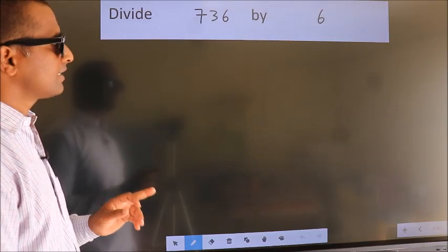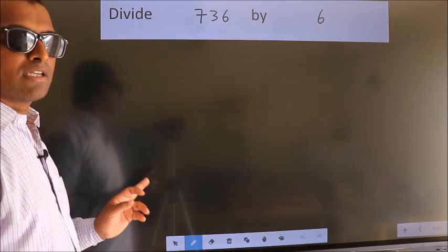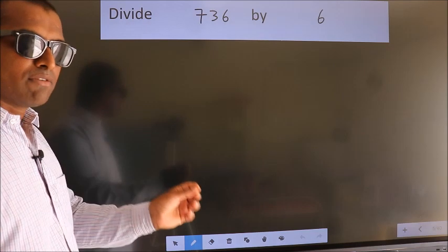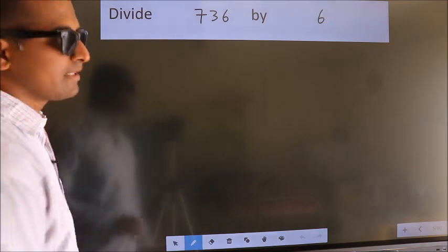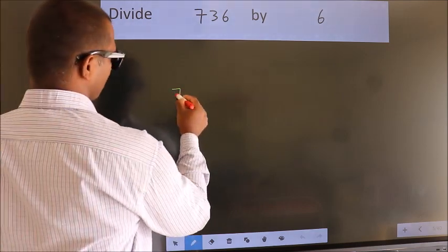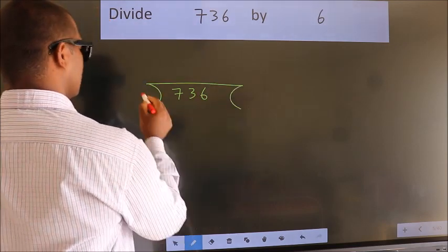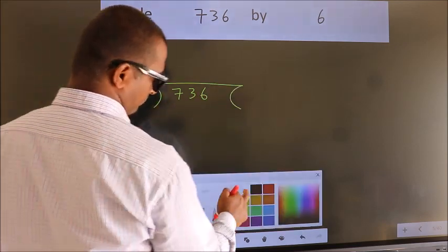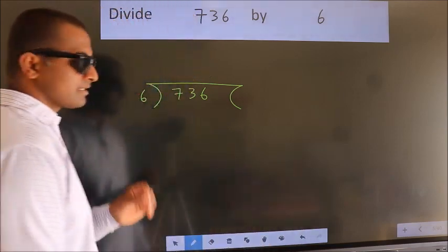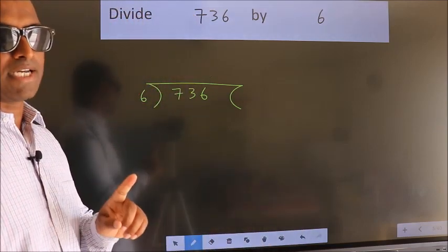Divide 736 by 6. To do this division, we should frame it in this way. 736 here, 6 here. This is your step 1.